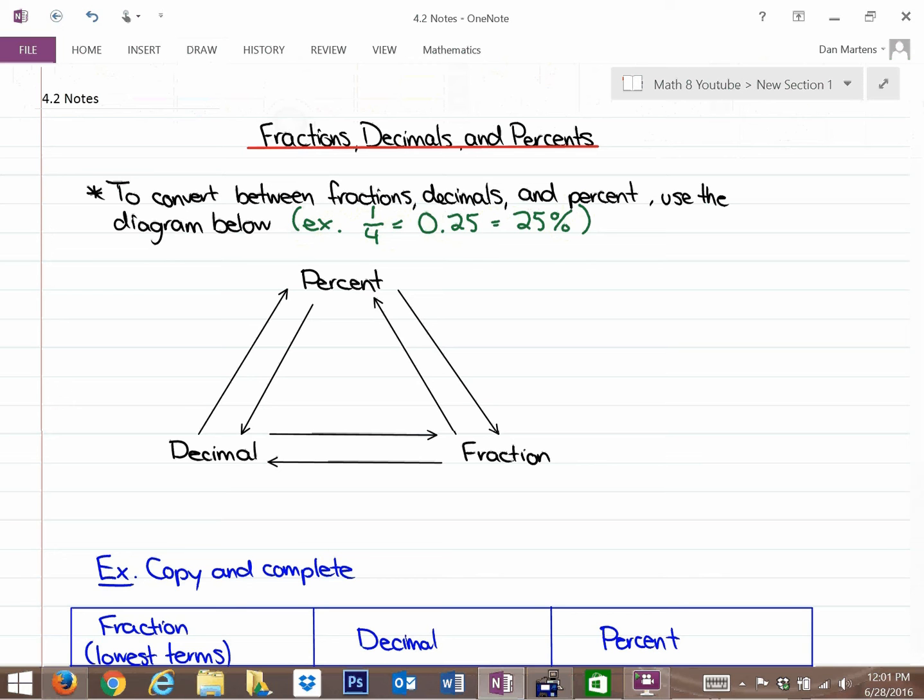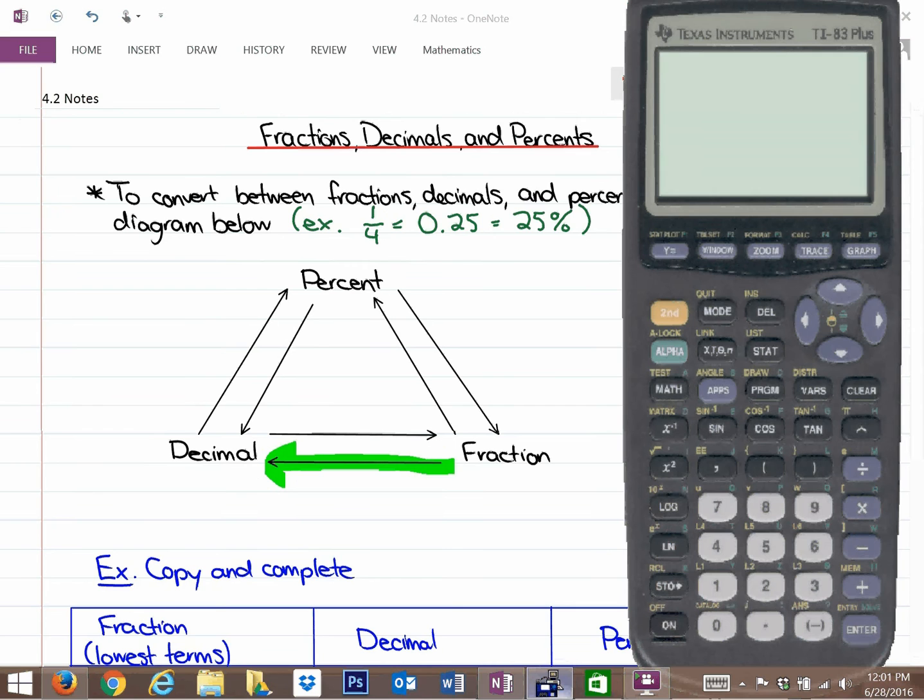So, probably the most straightforward, or a couple of straightforward ones to do, is first of all going from a fraction to a decimal. So, how do we go from something like one quarter to 0.25? You can make any fraction into a decimal equivalent by dividing the fraction, because fractions are actually representing division.